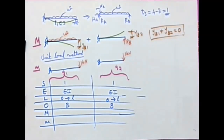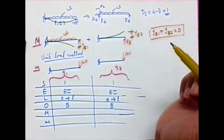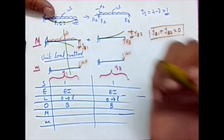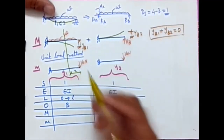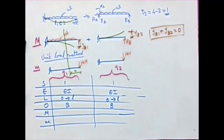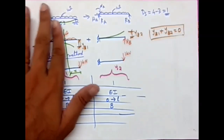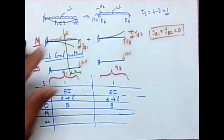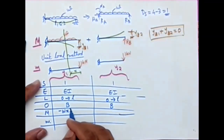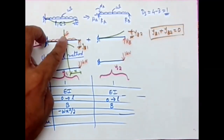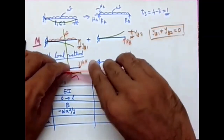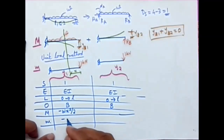To get the bending moment expressions, I take a common section at distance X from the origin B. For the capital M figure under UDL, the moment is W times X times X/2, which gives WX²/2. Since it is a hogging moment, capital M equals minus WX²/2. For the small m figure, applying the unit load gives 1 times X, which is also hogging, so small m equals minus X.